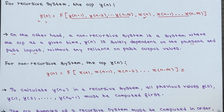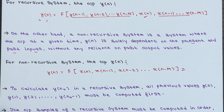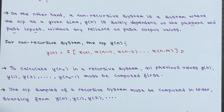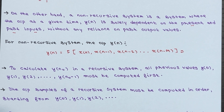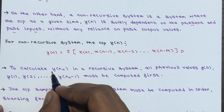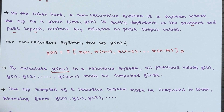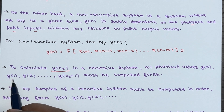Now when it comes to computing the output of a recursive system, things get a little more complex. For example, in order to calculate y of n naught, we have to compute all the previous values of y first.